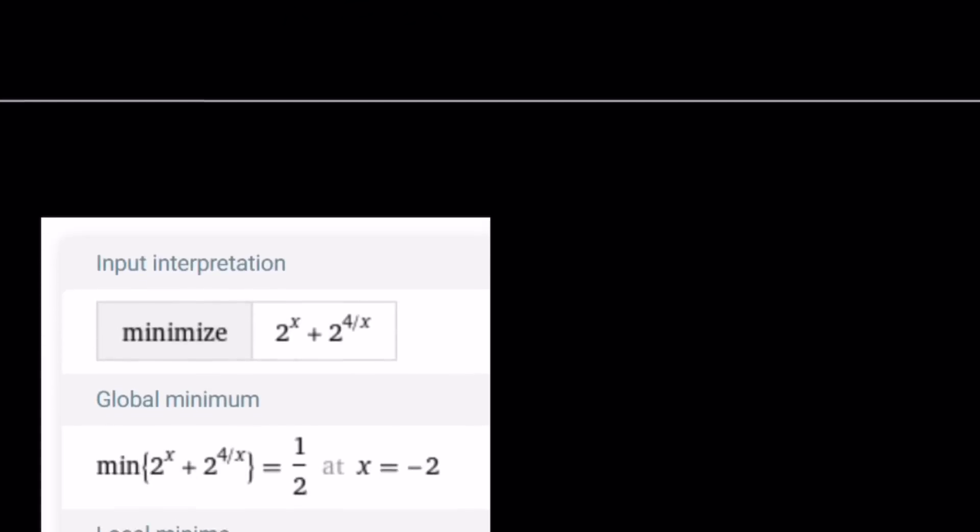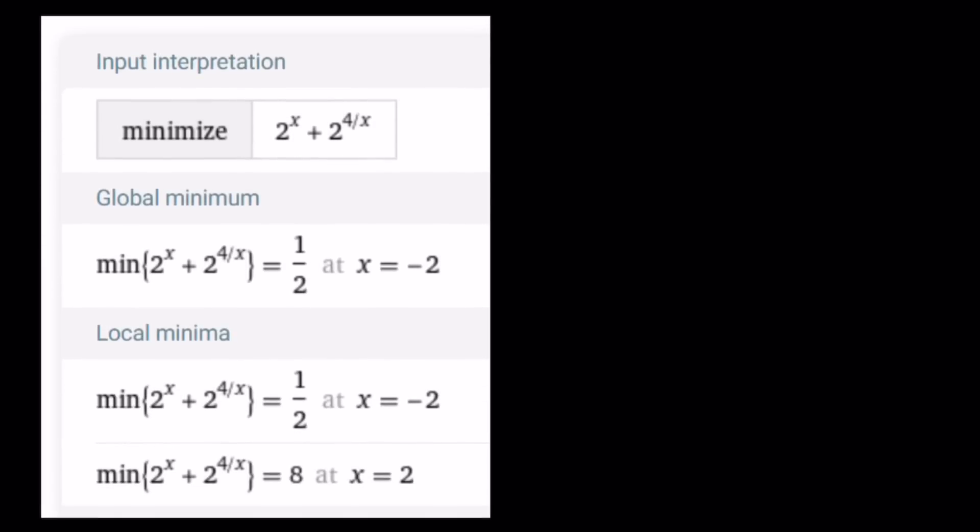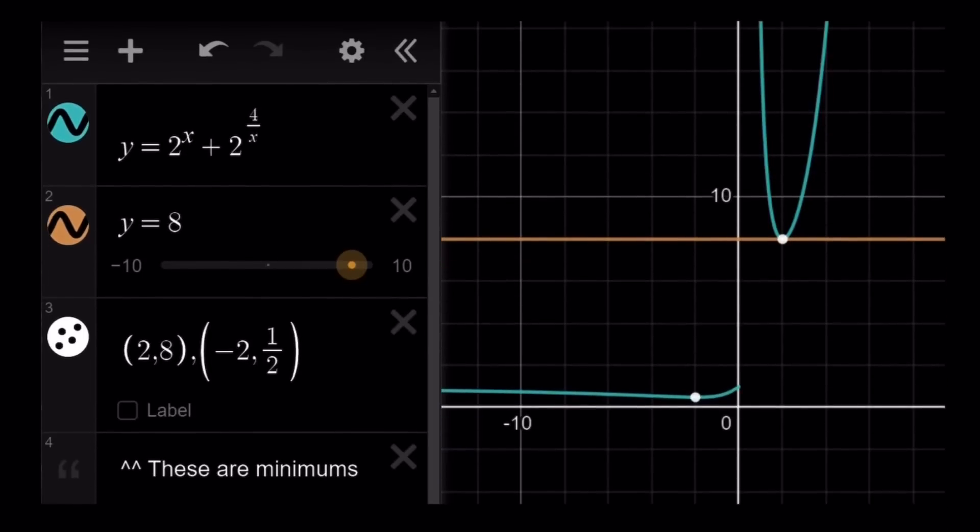Wolfram Alpha gives us 2 values at x equals negative 2. We already verified this. And x equals 2, we get 8, which is our original value. And let's go ahead and take a look at the graph, and we'll just finish up.